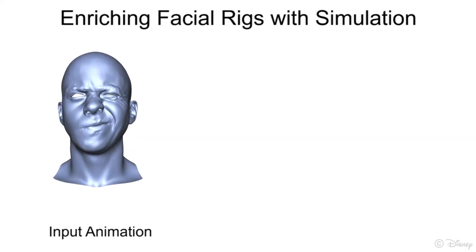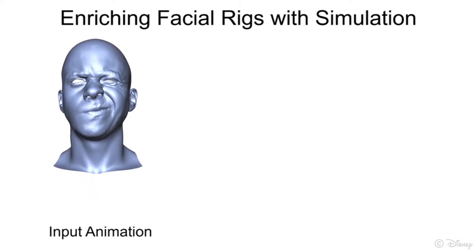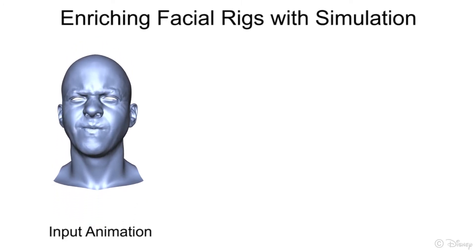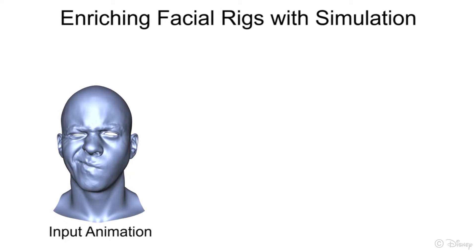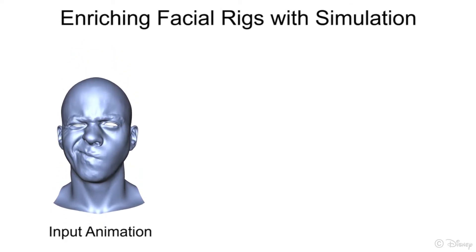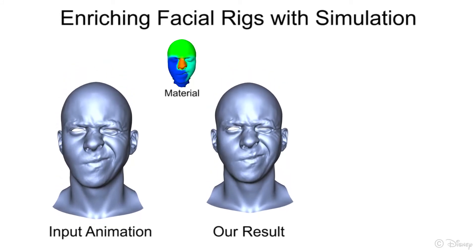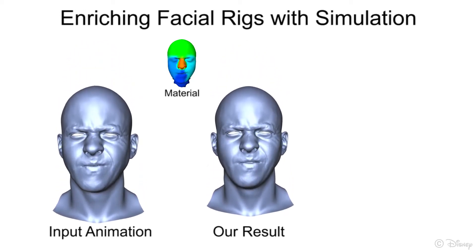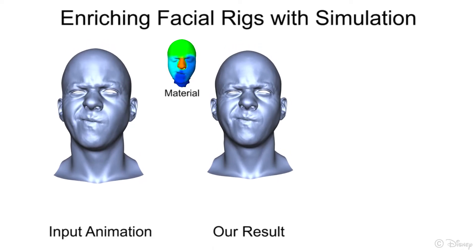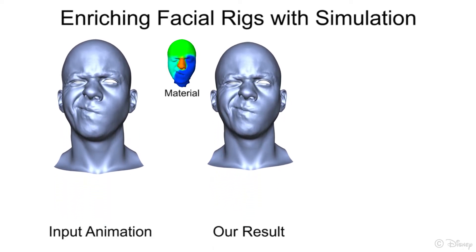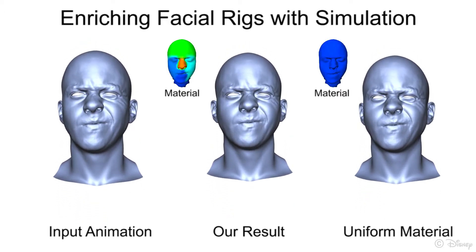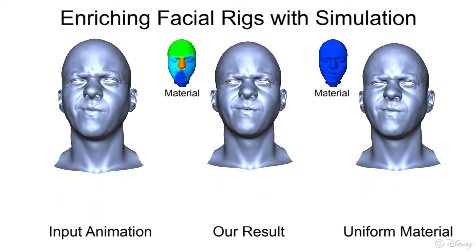Our approach to allow updating both rest shape and material properties during simulation allows us to add secondary dynamics to blend shape-driven facial animation. Here's an example, shown in slow motion, where an animator created a running sequence with a facial expression change from squinting on one side to squinting on the other side. Our result shows how secondary motion can be added in a spatiotemporally meaningful way. Notice that the tightened side of the face behaves more rigidly than the loose side, even as the expression changes. The material properties are intuitively controlled by painting on the blend shapes, and the material is blended between expressions. Here we show that a uniform material does not achieve the desired result, as the whole face has similar secondary motion, independent of the expression and muscle tightening.